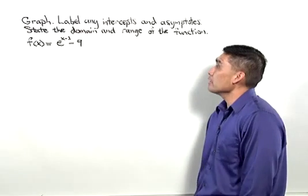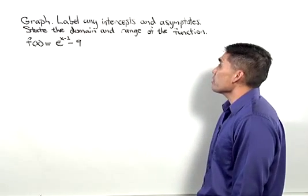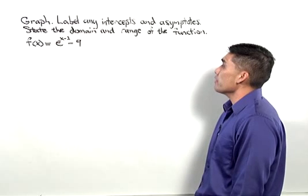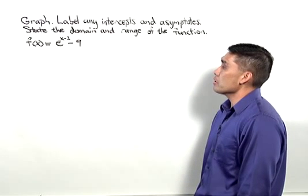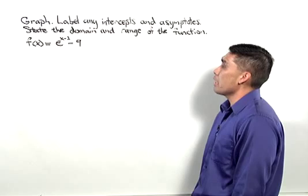Graph, label any intercepts and asymptotes, state the domain and range of the function. f of x equals e to the x minus 2 power minus 9.